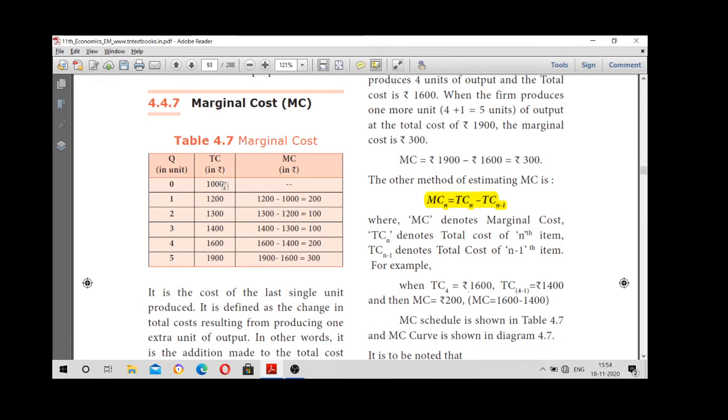Marginal cost is nothing but addition made to total cost. So marginal cost is calculated as total cost for the nth product minus total cost for n-1. N-1 is nothing but the previous product.